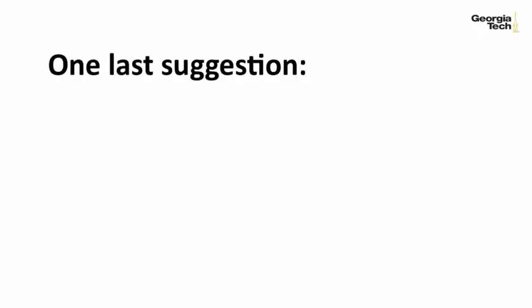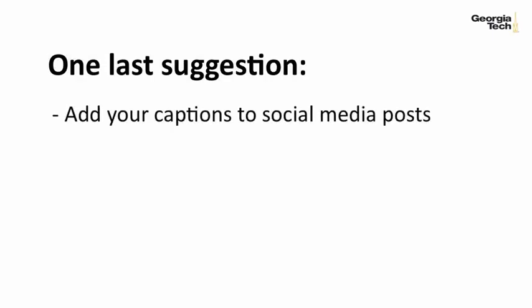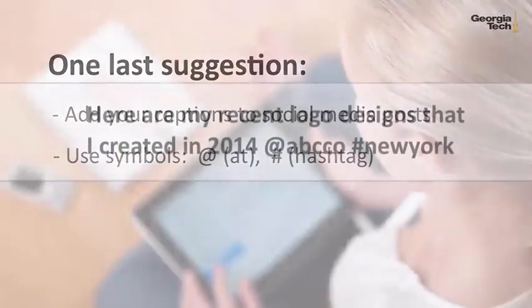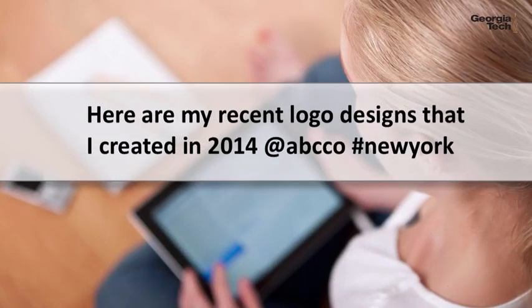Now try to complete your caption with information about your client, the location, and the date. You can also add your captions to main social networks like Instagram, Twitter, or YouTube. One difference is that you can use symbols like 'at' and 'hashtag' to mention your client and location. For example, a graphic designer might write: 'Here are my recent logo designs that I created in 2014. At ABCCO, hashtag New York.' Notice that with a hashtag, there are no spaces in between. In the resources, you can find more important information about using Instagram, Twitter, and YouTube.